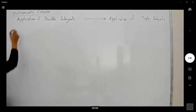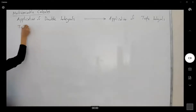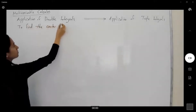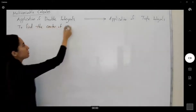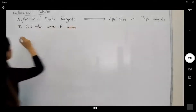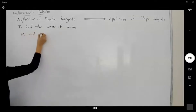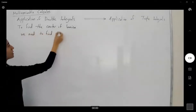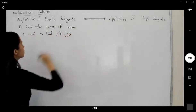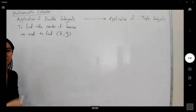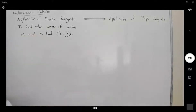So how do you find the center of mass? To find the center, for example, of our lamina, we need to find the coordinates x̄ and ȳ that represent the center or balancing point of that lamina or the mass that we have. How do we do that? We're going to use the double integral to actually calculate these coordinates.